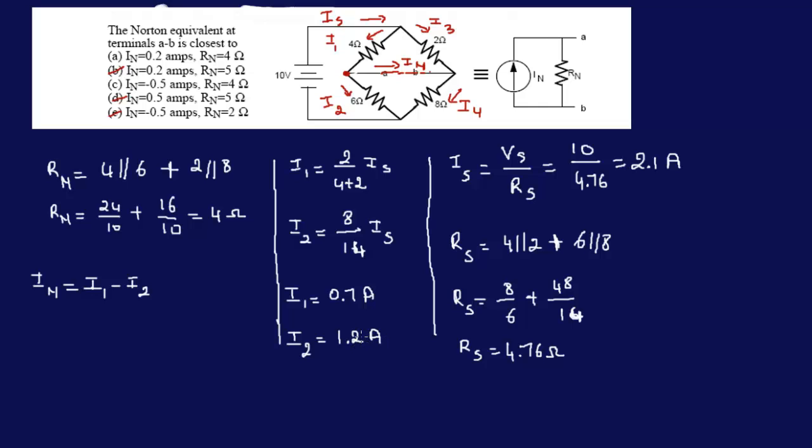Now I can go back to my previous step and calculate my IN, which is 0.7 minus 1.2. That's minus 0.5 amps. Because of a sign somewhere, we probably get the opposite direction. We know that IN is actually coming in instead of going that way in direction because we have a minus sign here.